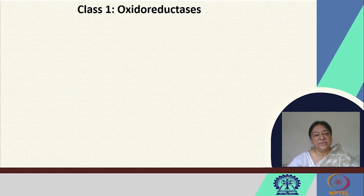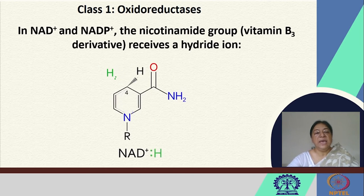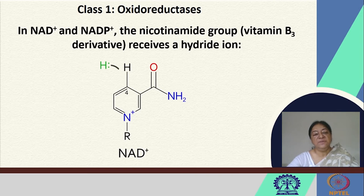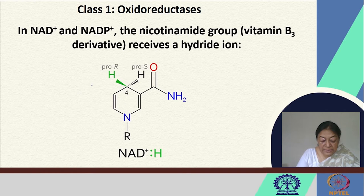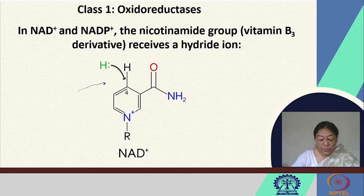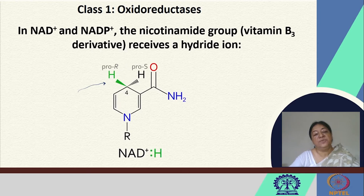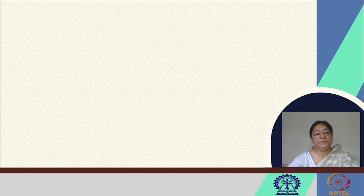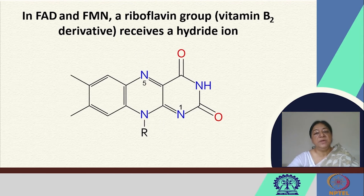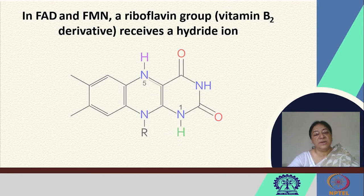For oxidoreductases, we will be looking at NAD+ and the nicotinamide group, a vitamin B3 derivative, where we can see the receipt of a hydride ion and the importance of pro-R and pro-S chirality. Similarly, FAD and FMN in the riboflavin group, which is a vitamin B2 derivative, also receives a hydride ion in an oxidoreductase example.